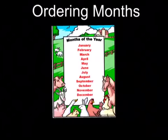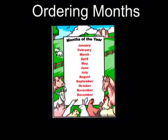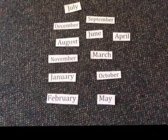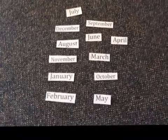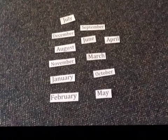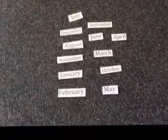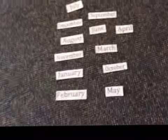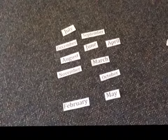But there are so many months in the middle that we haven't ordered yet. I have cut up the months of the year and we are going to order those together. We have all 12 months of the year. We want to order these months from the first month — which we know is January — to the last month — which we know is December. So let's put January at the start of our list, and we'll put December at the bottom.